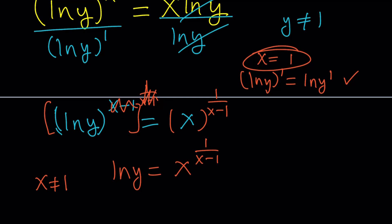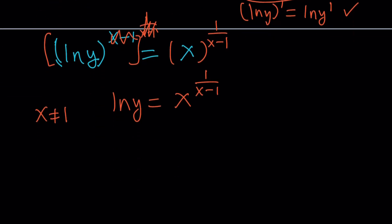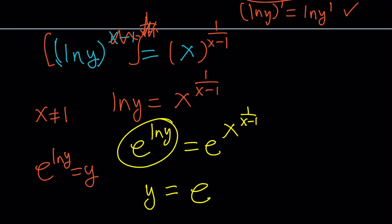Now, we were trying to solve for y, and we're so close. What is y? If you know that e to the power ln y equals y, then you can do e to the power both sides. e to the power ln y is e to the power x to the power 1 over x minus 1. And then this becomes y. So y equals e to the power x to the power 1 over x minus 1. That seems to be y in terms of x. Such an interesting function.